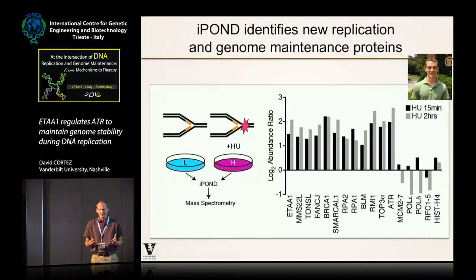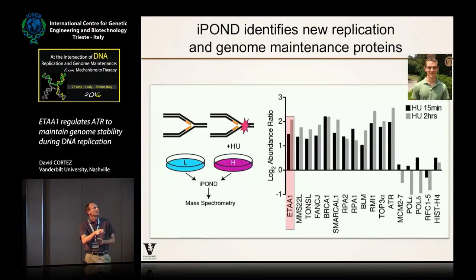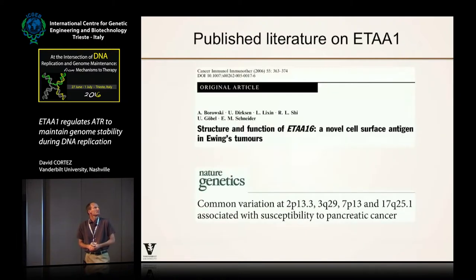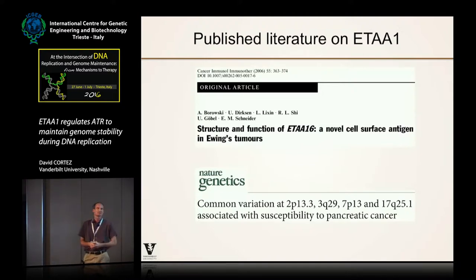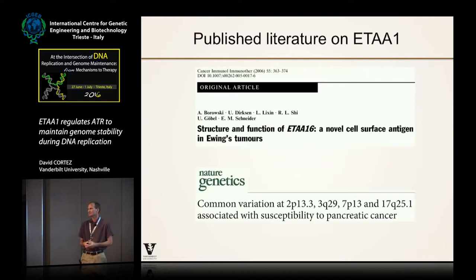Because mass spectrometry is an unbiased method, we also observe many proteins in the dataset that we've never studied before. One of those I'm going to tell you about today is the ETAA1 protein. It behaves very similarly to canonical replication stress response proteins — things like RPA, ATR, and the Bloom protein — all of which become enriched at the fork in response to stalling. There's not much known about this protein; it's also called ETAA16 for Ewing's tumor-associated antigen. A polymorphism at the ETAA1 locus may be associated with increased risk of pancreatic cancer.